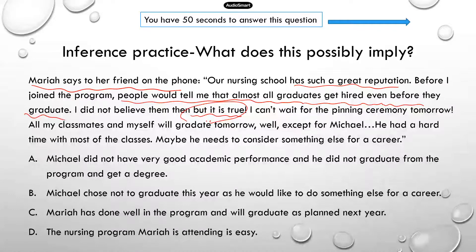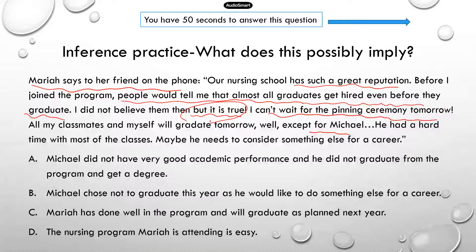Mariah says: 'I can't wait for the pinning ceremony tomorrow. All my classmates and myself will graduate — well, except for Michael. He had a hard time with most of the classes. Maybe he needs to consider something else for a career.' You can infer that Michael didn't do very well and it looks like he did not get to graduate.